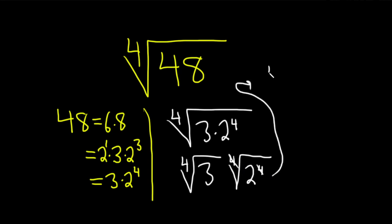So you get the fourth root of 3 times 2. Now, it's not usually a good idea to leave the number like this in the back, because people might think that it's inside the root. So let's go ahead and put it in the front. So this is 2, fourth root 3.